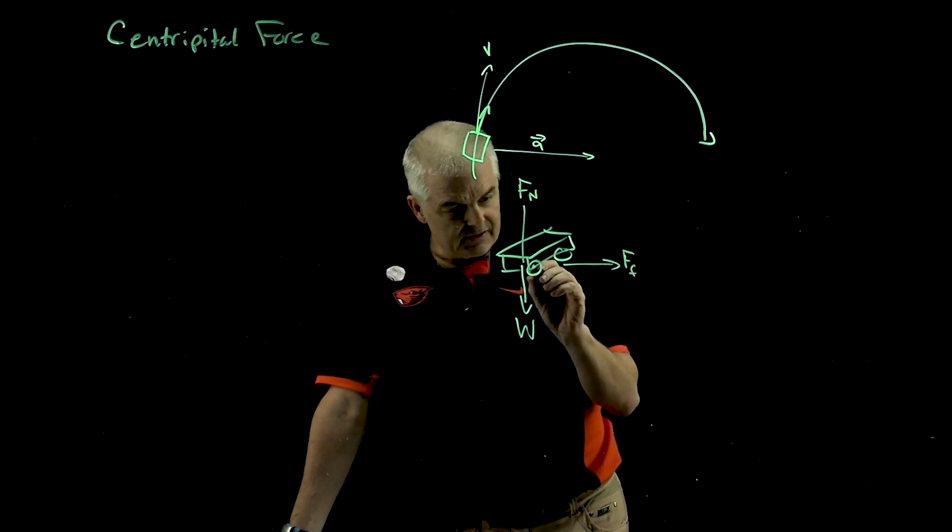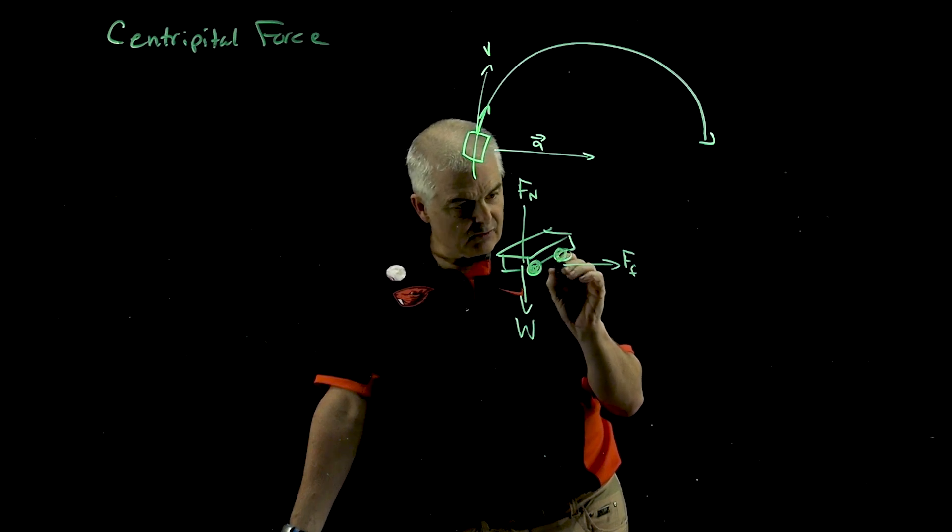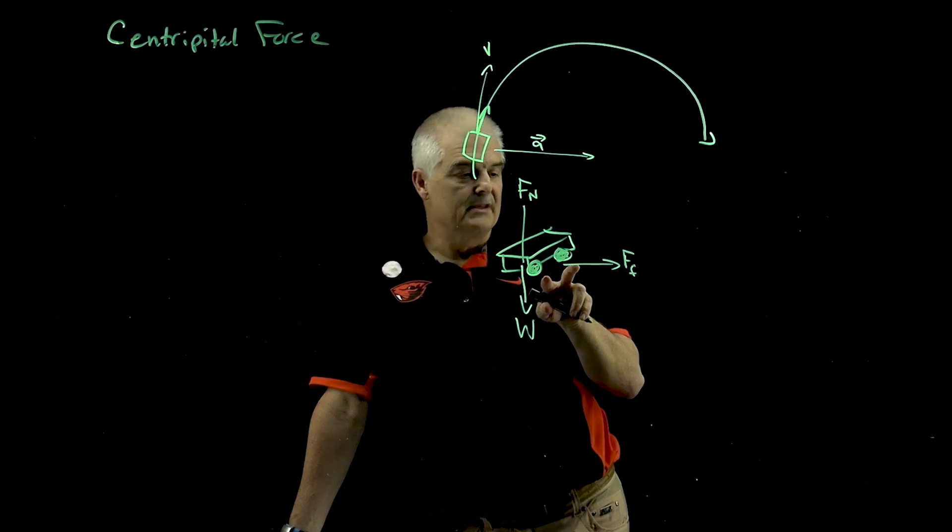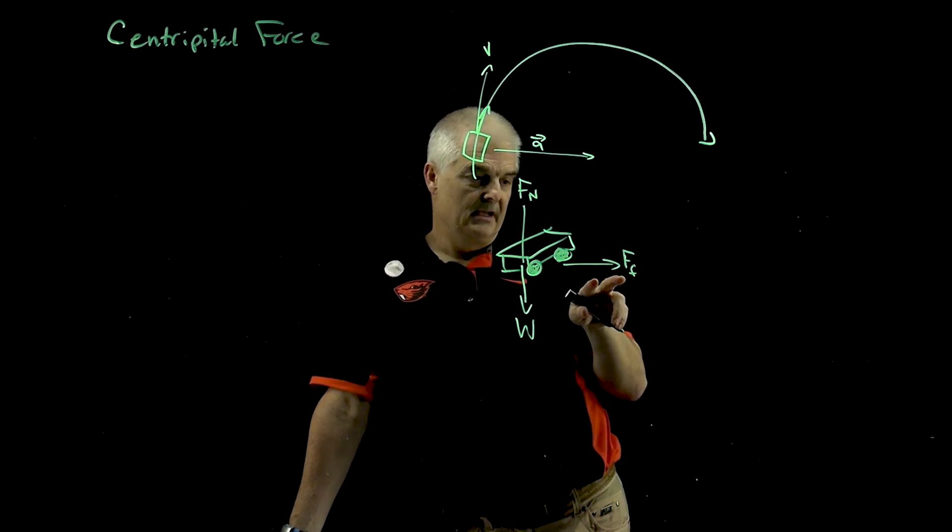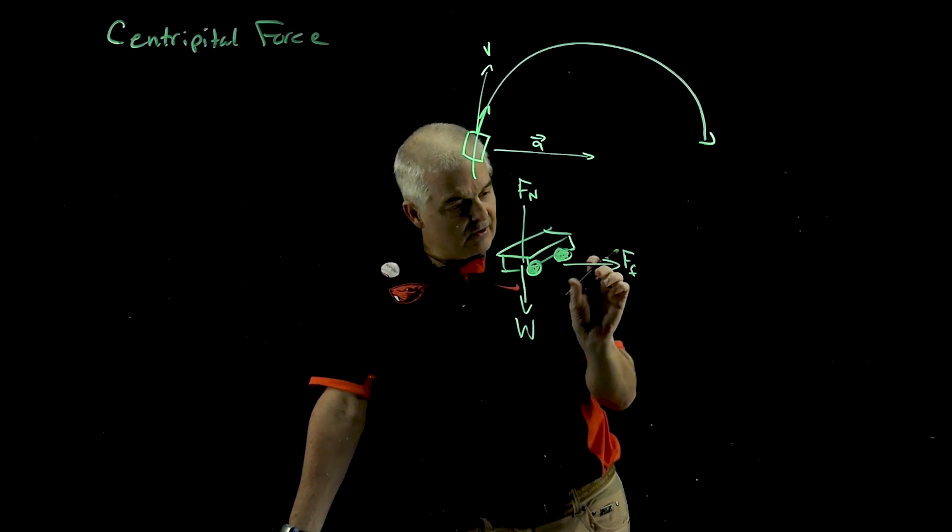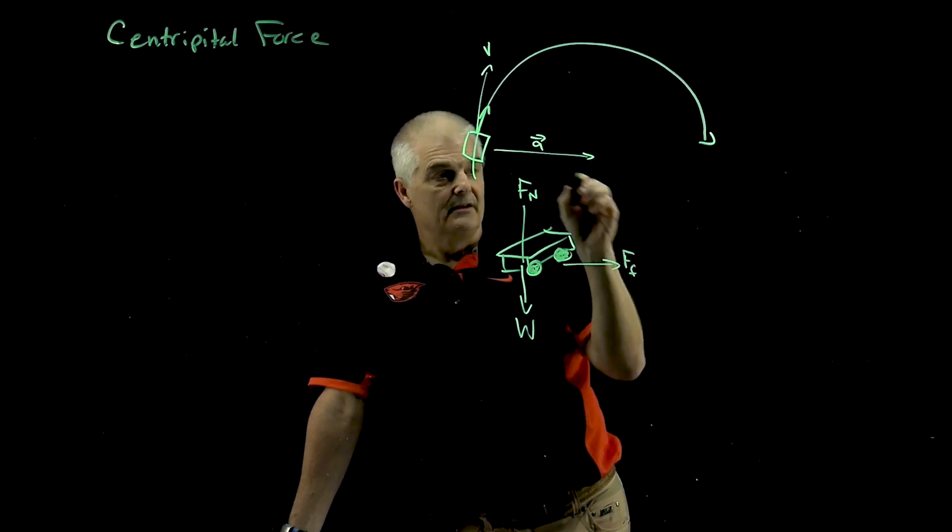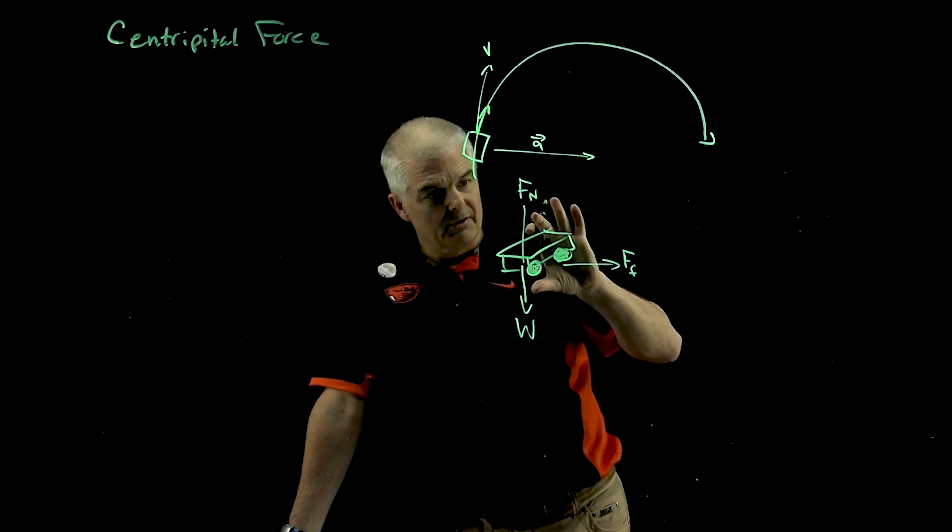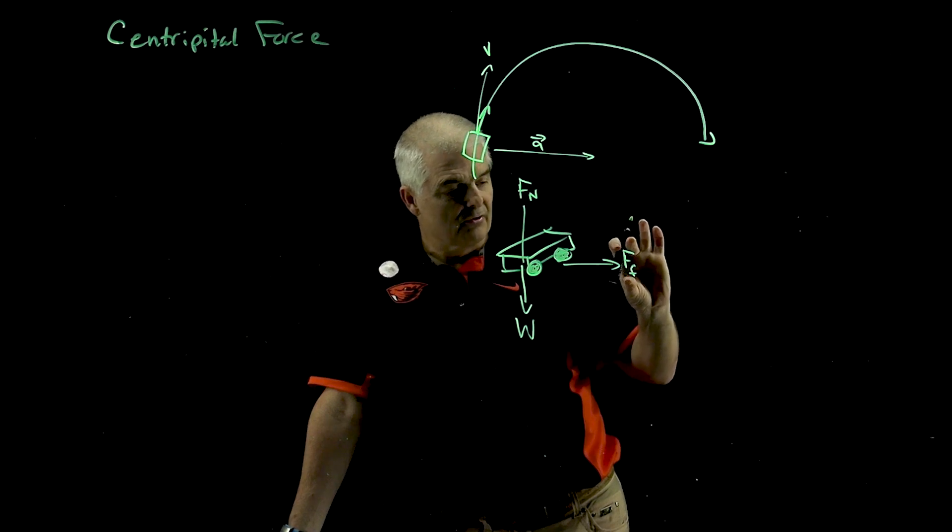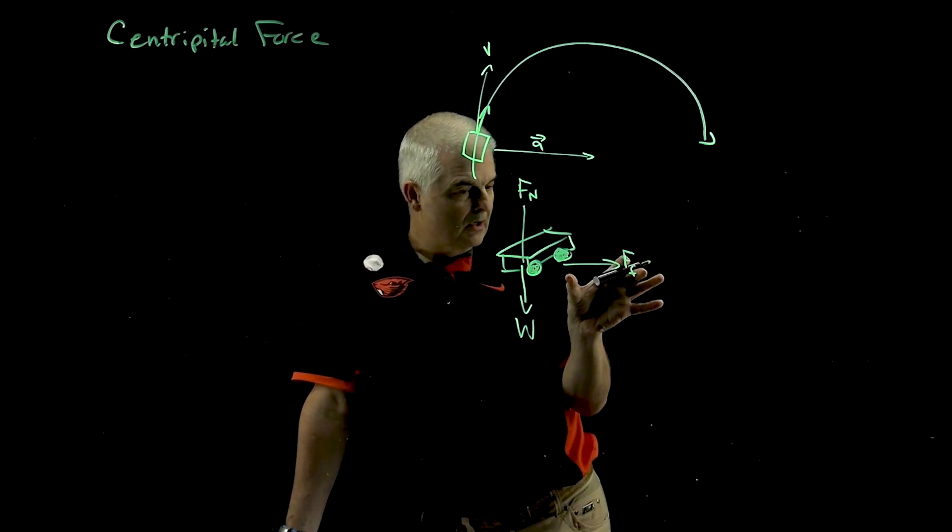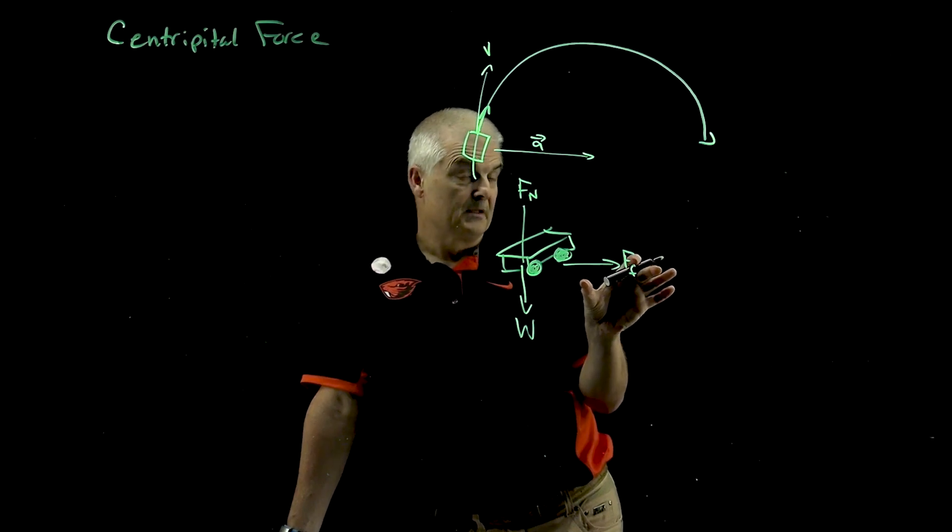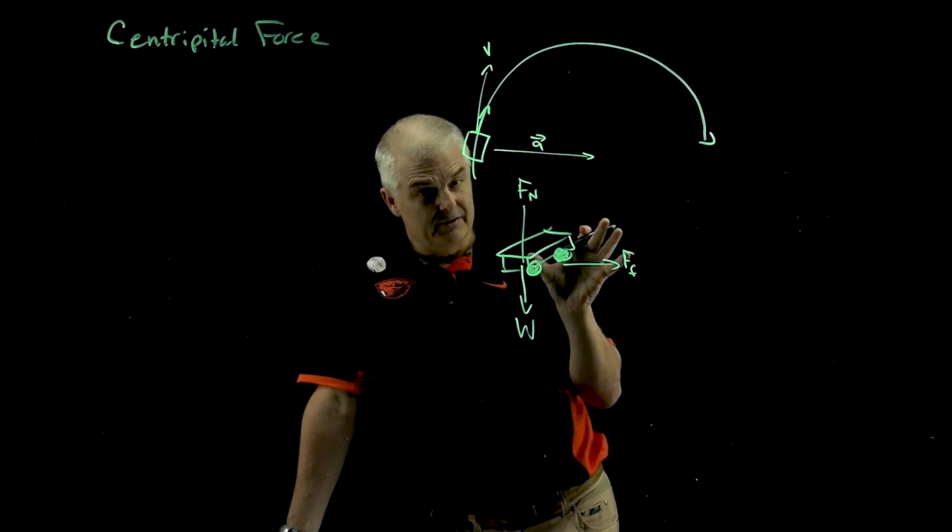So it really is a function of the tires. What's actually keeping the car from going straight is the friction between the tires and the road. And it might seem weird that the frictional force is moving towards the center. The frictional force is towards the center of the circle because normally the normal force and the weight force are going to cancel out. And it's the frictional force that's going to hold the car on the road and keep it from spinning out.